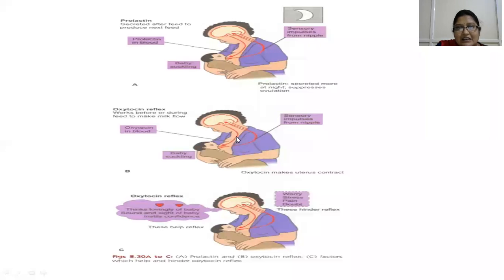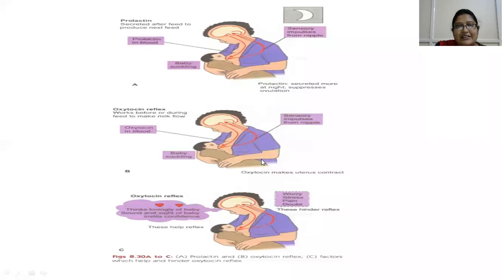Night-time feeding is crucial because prolactin is secreted during night times. If breastfeeding is delayed or infrequent during night times, it causes decreased prolactin production. For the oxytocin reflex, sensory impulses from the nipple reach the brain, oxytocin is secreted into the blood, causing contraction of myoepithelial cells, and as a result milk is ejected. It works before or during a feed to make milk flow. Oxytocin is produced by the posterior pituitary gland.